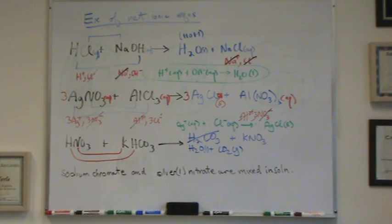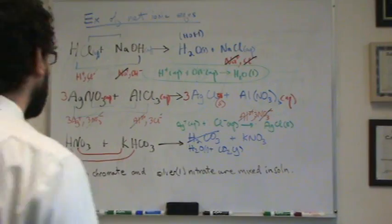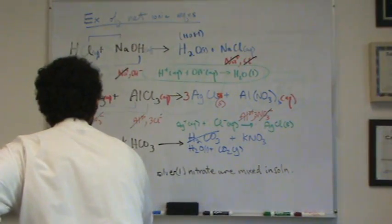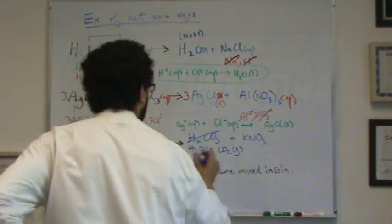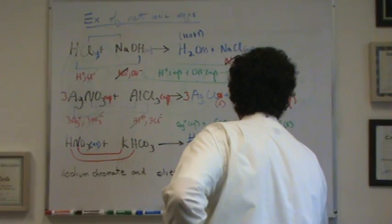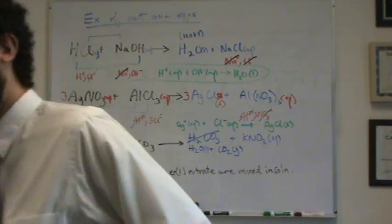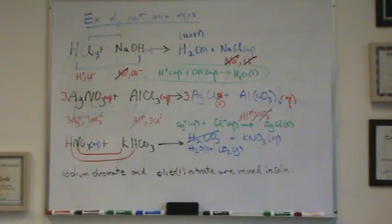For the very first one, HNO3, anything with a nitrate is aqueous, going to my solubility rules. So that's aqueous. And I have a KNO3 here. That's aqueous. Again, anything with a nitrate is aqueous on the solubility rules.